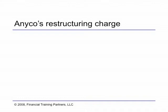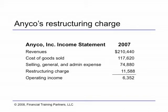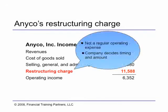How does all this help us analyze NECO's operating results? Let's take a look at part of NECO's income statement for 2007. It shows the restructuring charge of $11,588,000 in operating expenses. But the restructuring charge is different from NECO's other operating costs. It doesn't happen regularly, and management has a lot of control over when it occurs and how big it is. For those reasons, it doesn't belong in our analysis of NECO's real earning power.